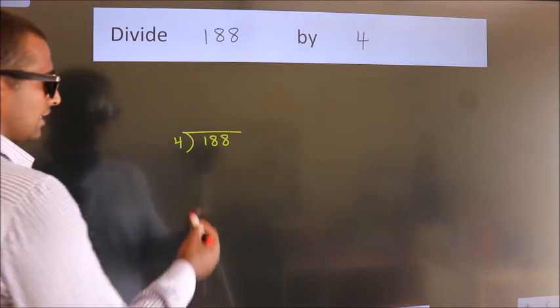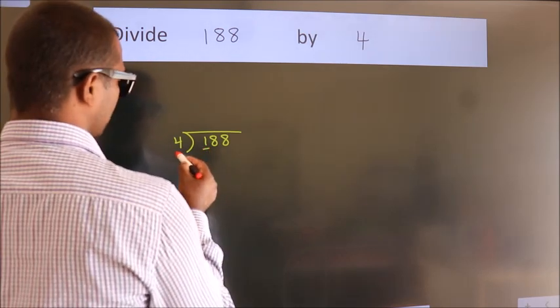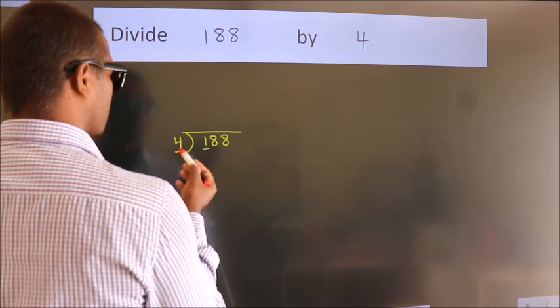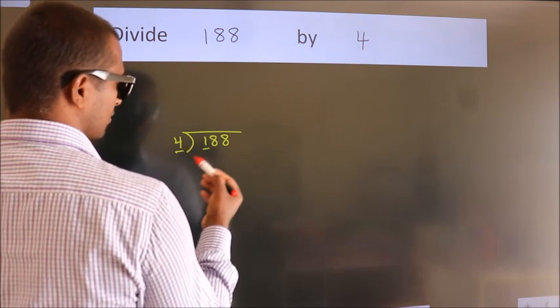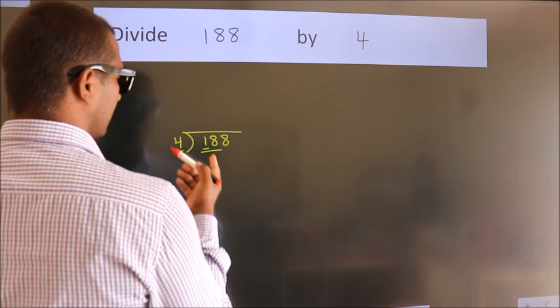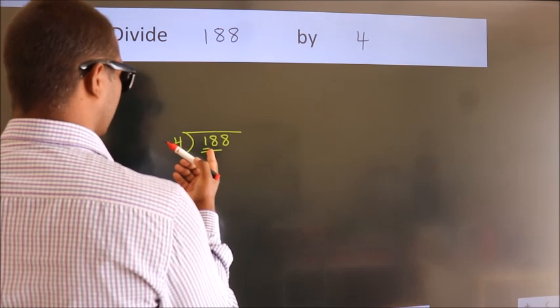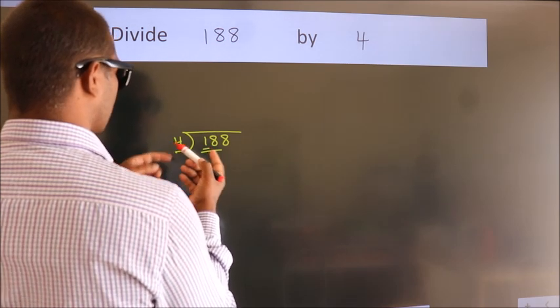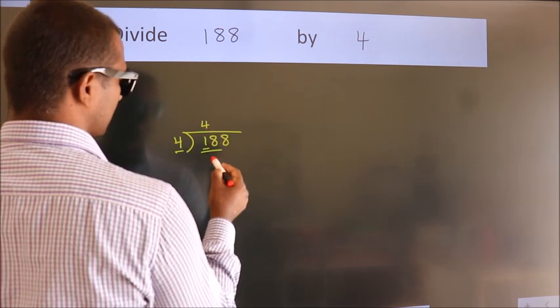Next, here we have 1, here 4. 1 is smaller than 4, so we should take 2 numbers: 18. A number close to 18 in the 4 table is 4 times 4 equals 16.